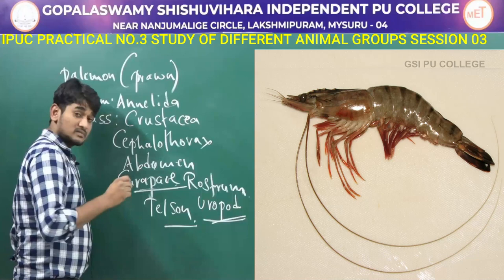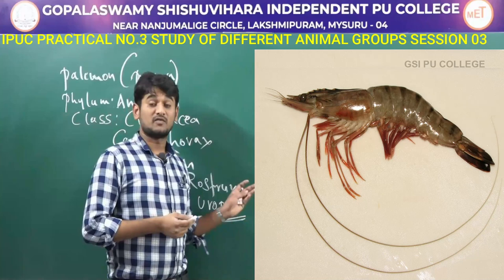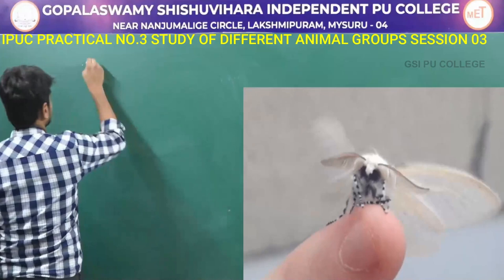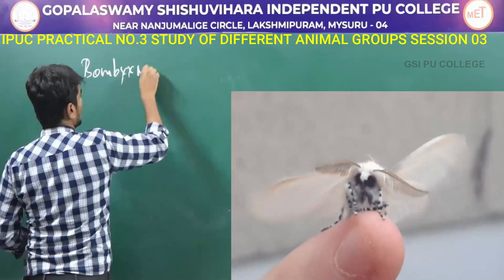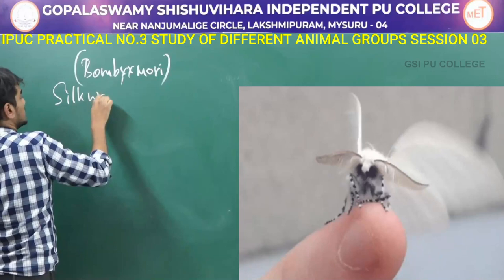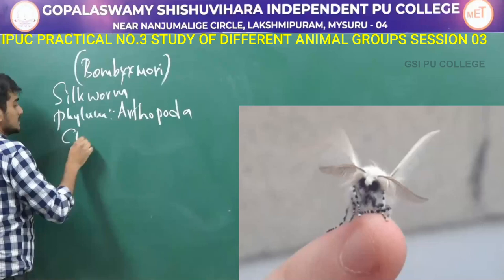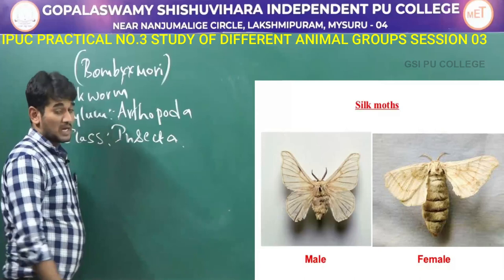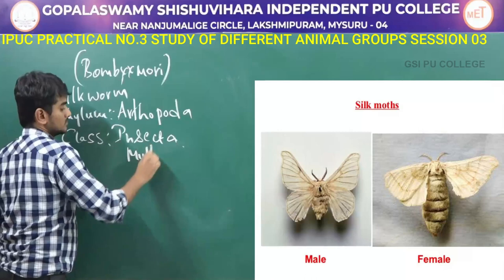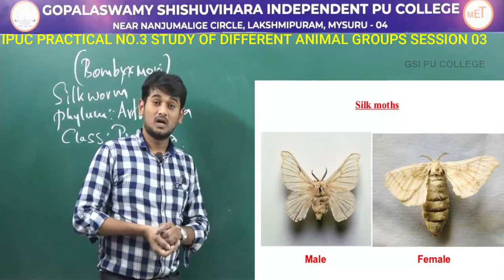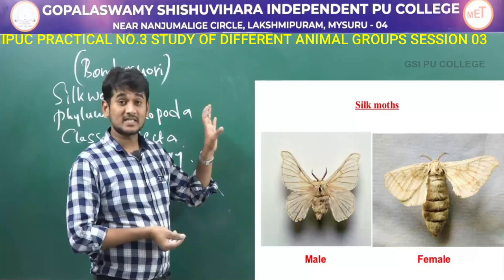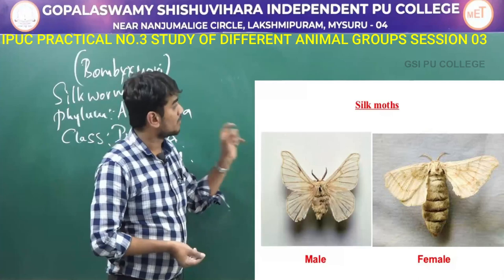The next one is Bombyx mori, commonly called as silkworm. It comes under the phylum Arthropoda and class Insecta. Bombyx mori is commonly called as silkworm, which feeds on mulberry. The body is creamy white and soft, divided into three parts: head, thorax, and abdomen.